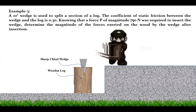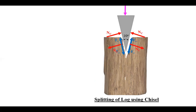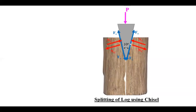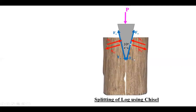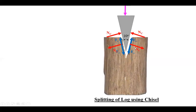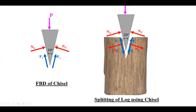Now let us draw the free body diagram. This is the log. A force P is applied onto the chisel wedge. As it moves downwards, the friction force acts on the chisel upwards. Opposite to that, there will be friction force acting downwards on the log. There will be a normal reaction acting on the wedge, and an equal and opposite normal reaction acting on the log. Considering the wedge only: friction forces act upwards and normal reactions act inward, with a 10-degree wedge angle.